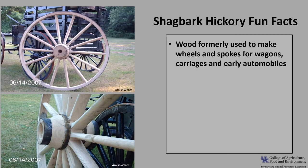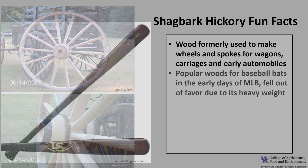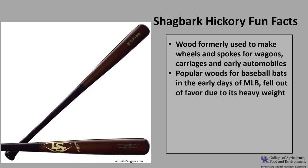Now for a few fun facts about Shagbark Hickory. The wood was formerly used to make wheels and spokes for wagons, carriages, and early automobiles. Hickory wood was also one of the most popular woods for baseball bats in the early days of Major League Baseball, but fell out of favor due to its heavy weight, which slows down bat speed. However, you can still purchase bats from Louisville Slugger made of hickory wood, and they are sold for the heavy hitters.